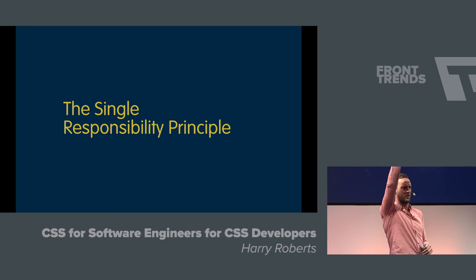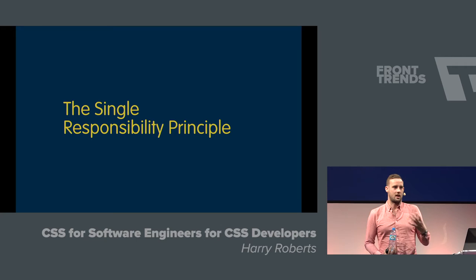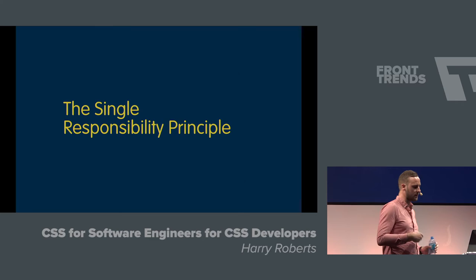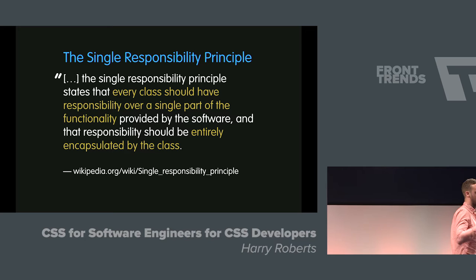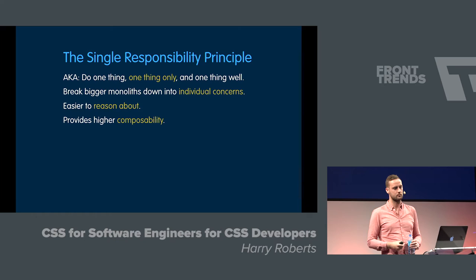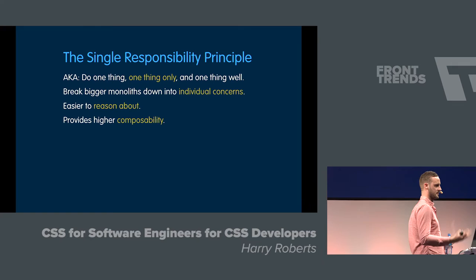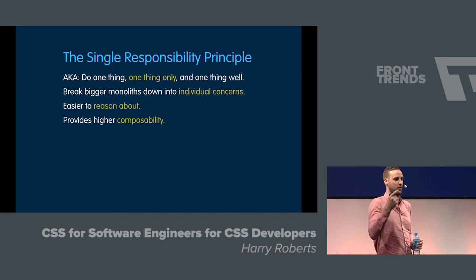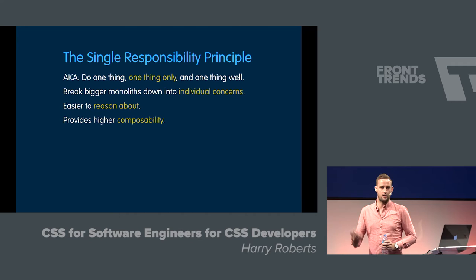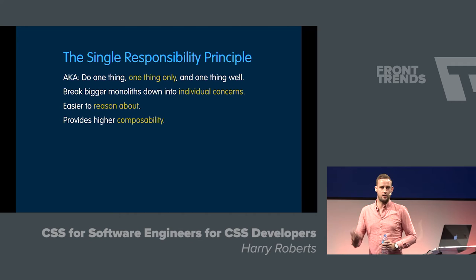The single responsibility principle is probably the most impactful one — you'll get the most bang for your buck by following this one principle. It states that every class should have responsibility over a single part of the functionality. All we really care about is: do one thing, one thing only, and do that one thing very, very well. The single responsibility principle is also paraphrased as 'everything should have one reason to change.' Basically what it does is it takes big tasks and breaks them down into much smaller individual chunks. We break down big complex monoliths and then recompose them out of the smaller individual tasks.